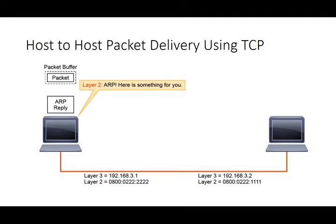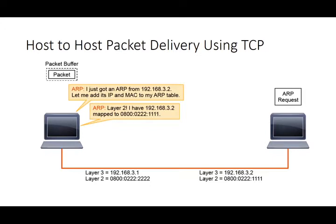Layer two now builds the frame. In the frame we can see several items: the original TCP SYN — that is our layer four, transport layer information. Then we have source and destination IP addresses — the network layer, or layer three. Then source and destination MAC information — layer two data. The source and destination MACs are specific addresses; this is not a broadcast, this is a unicast. Layer two sends that pending packet out across the wire.